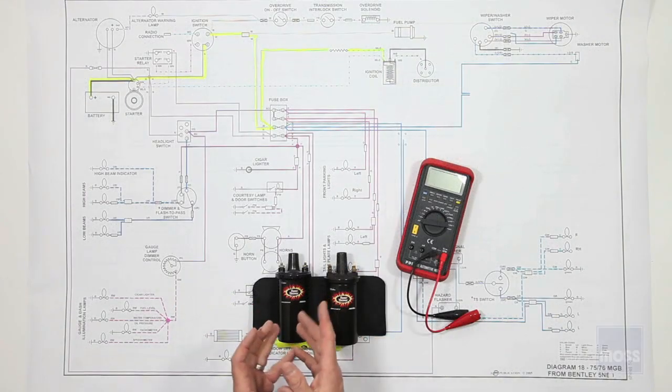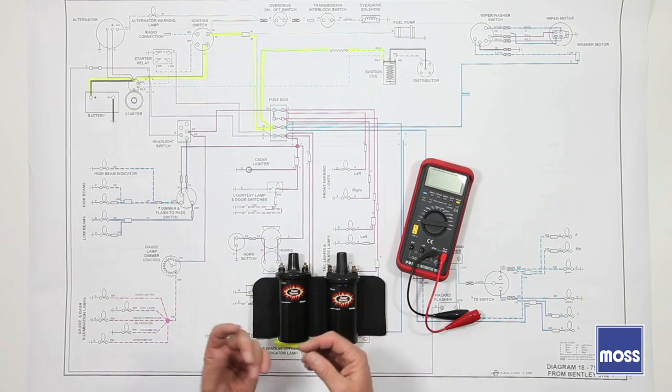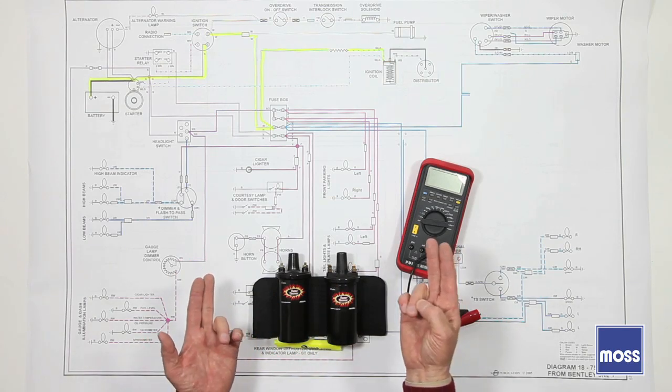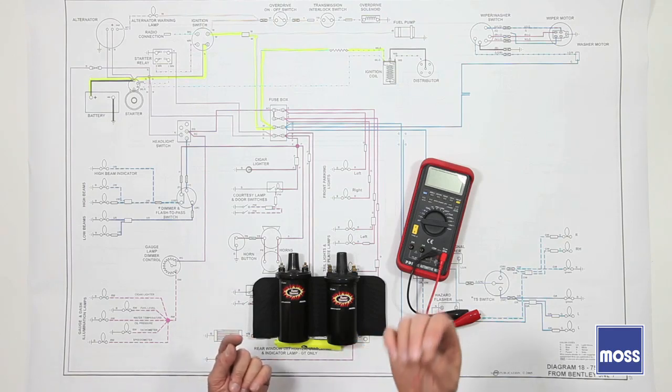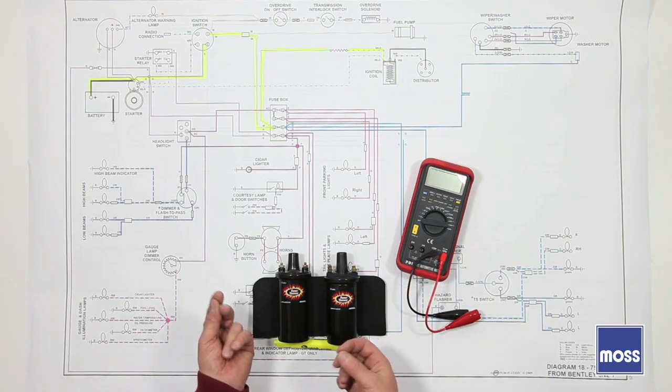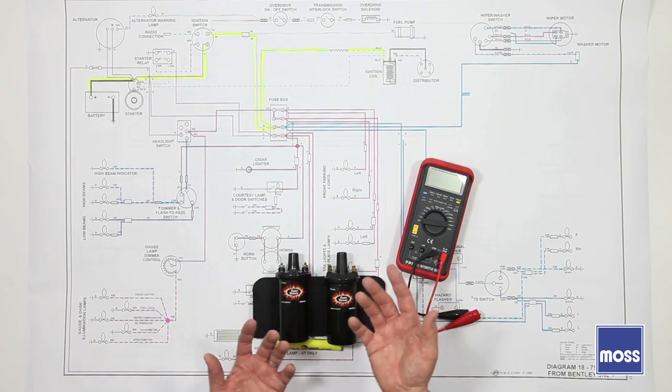Sometimes when buying ignition parts, especially for cars from about the 1960s onward, we see references to ballasted and non-ballasted ignition systems. We see 1.5-ohm coils, 3-ohm coils, 6-volt coils, and 12-volt coils. We have ballasted coils and non-ballasted coils.